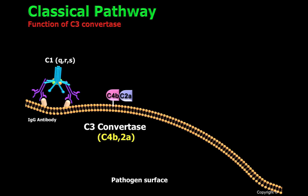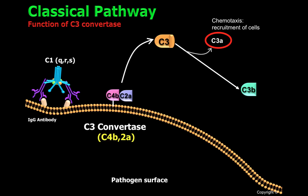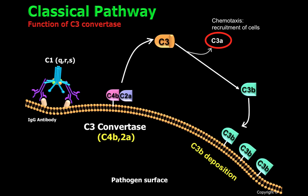The C3 convertase, C4-B-C2-A, will cleave C3, generating C3-A, which is a potent chemoattractant molecule that will recruit immune cells to the site of the infection, and C3-B. C3-B, if it is close enough, will bind covalently to the cell surface of the pathogen. The C3 convertase will be able to cleave several molecules of C3, depositing many molecules of C3-B on the cell surface. Because C3-B is able to be recognized by immune cells and promote phagocytosis, it is considered an opsonin. So C3-B participates in a process called opsonization.